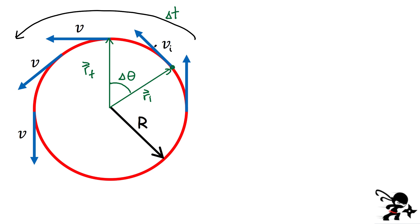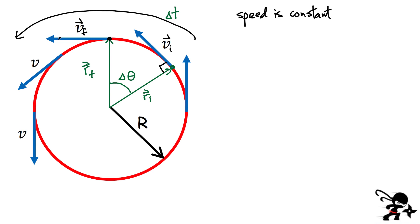Now let's look at what happens to the velocity. Everything we're considering here assumes that the speed is constant. If the speed is constant, it means that the magnitude of the velocity everywhere on the circle has to be the same. That's very important. The direction can change, and that's what these blue arrows are showing. At my initial position, the direction of the velocity is vi, which is perpendicular to the position vector ri. After some time delta t, my velocity is the final velocity — tangent to the curve, pointing to the left. Even though the speed is constant, velocity changes because velocity has direction associated to it.